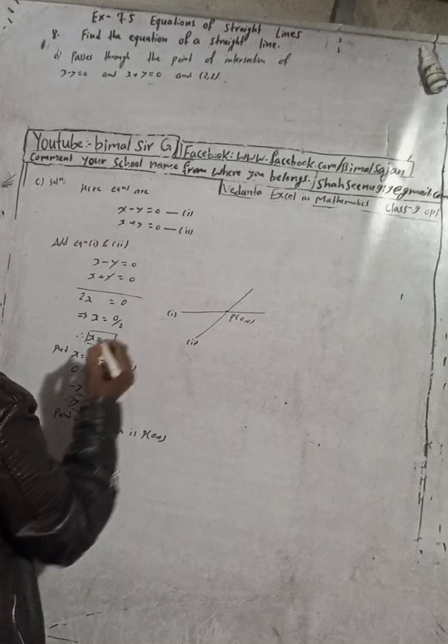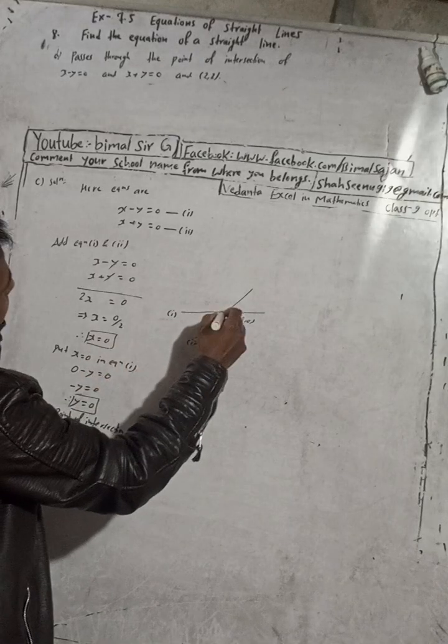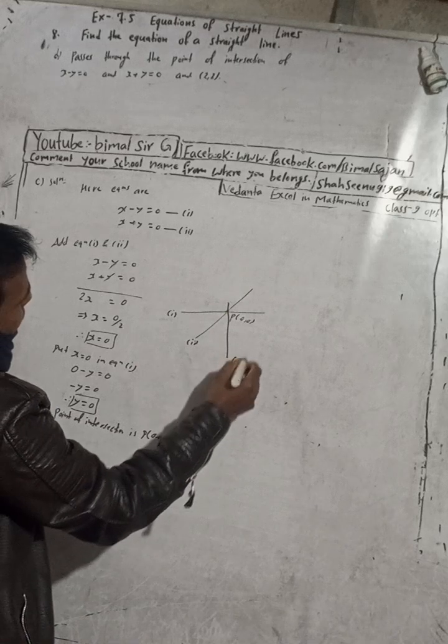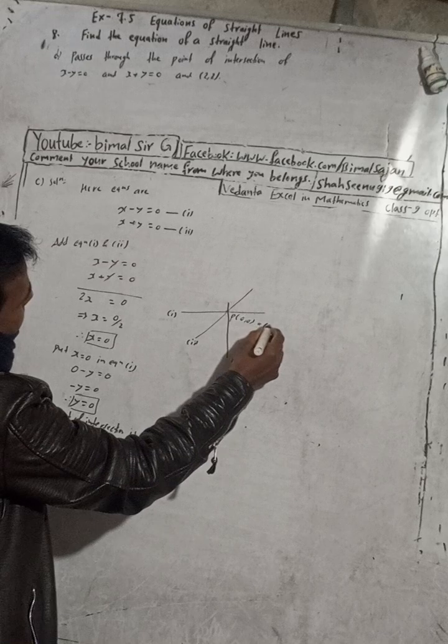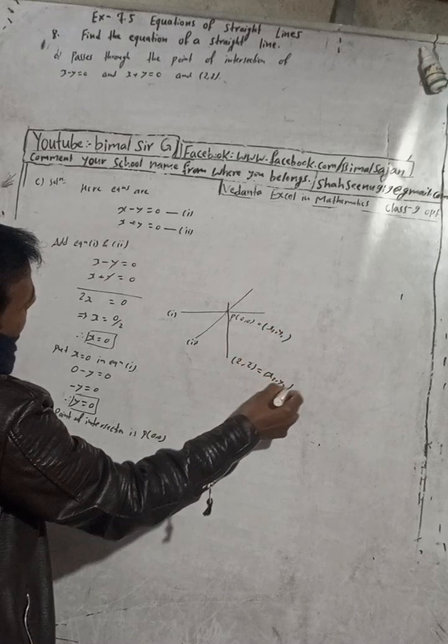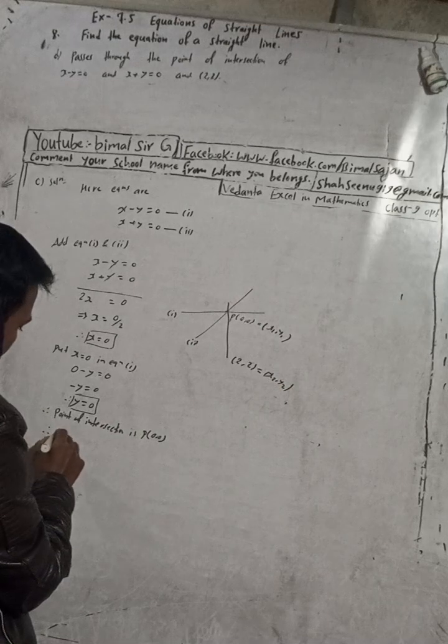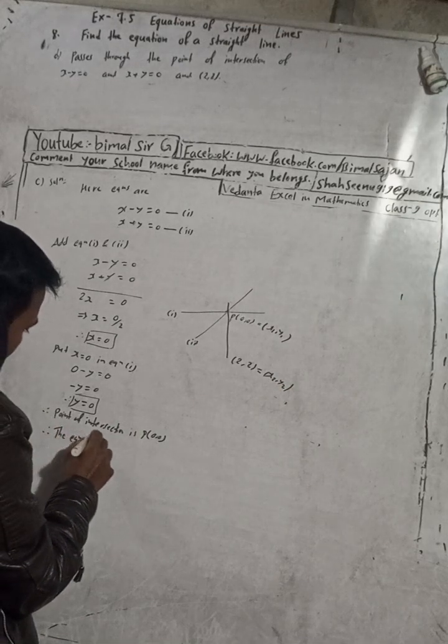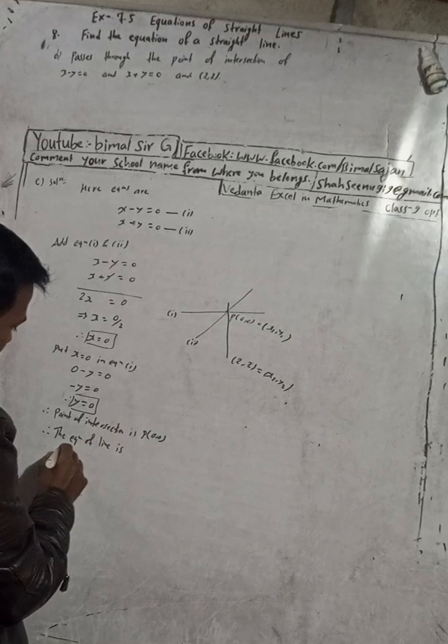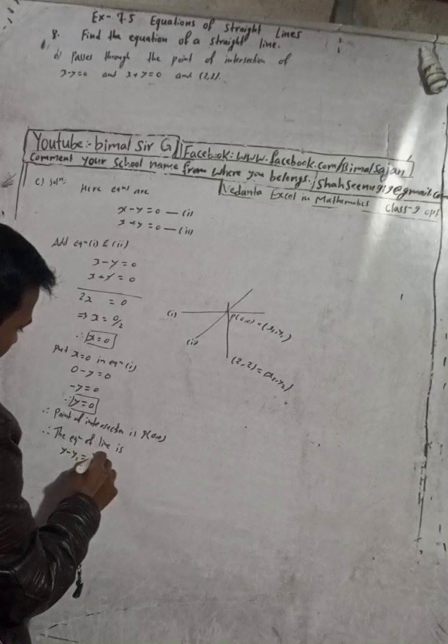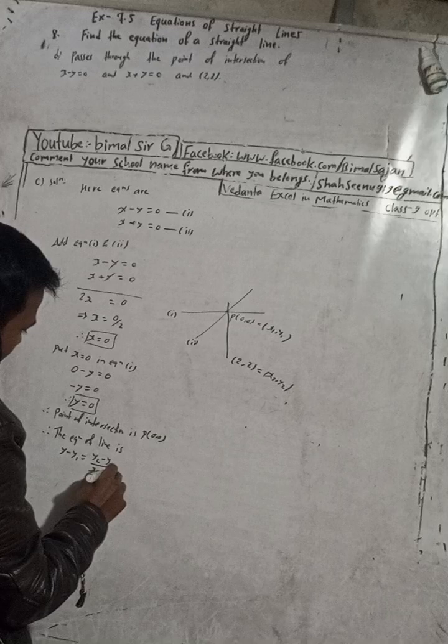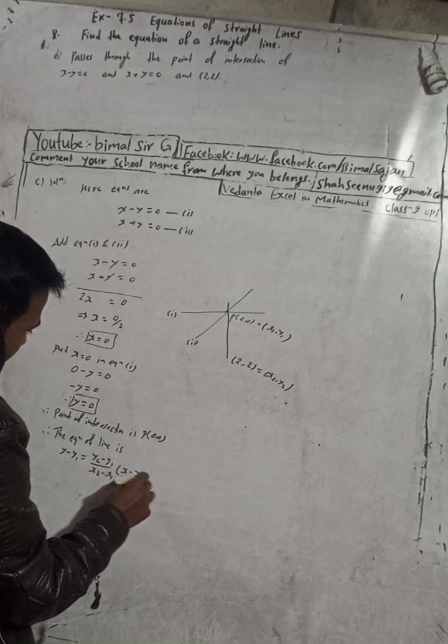Now here we have to find the equation of the line. This is x1 y1, and this is our x2 y2 line. Therefore, the equation of line is y minus y1 equals y2 minus y1 by x2 minus x1 into x minus x1.